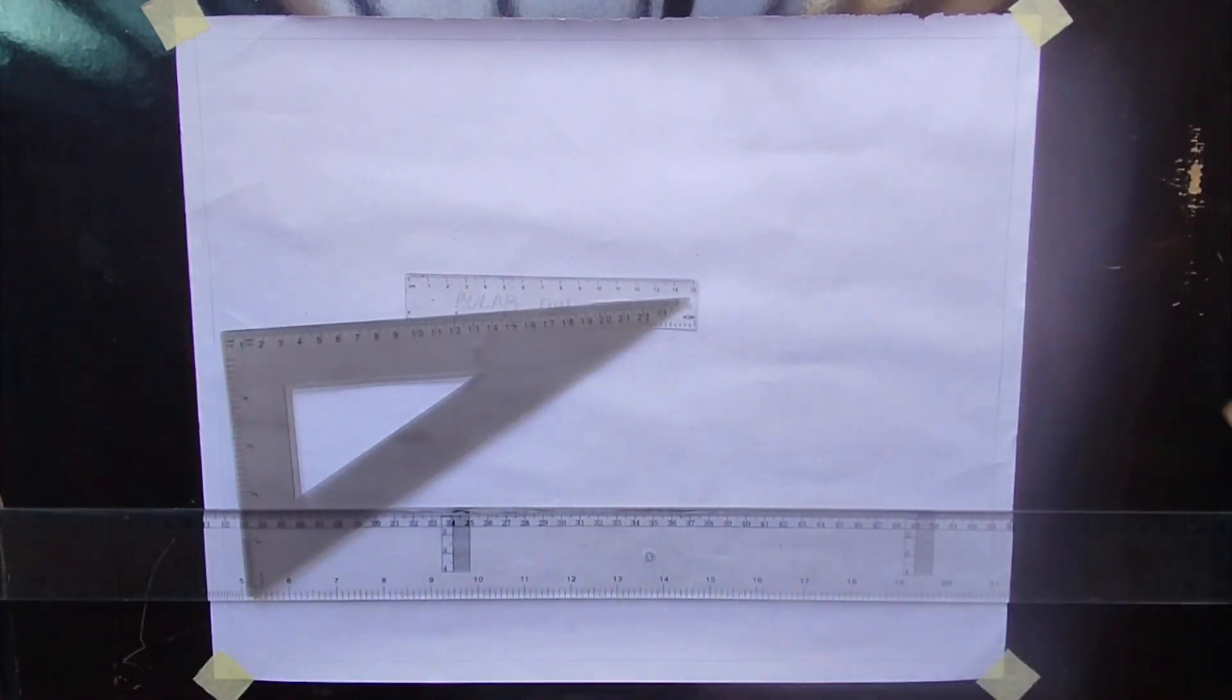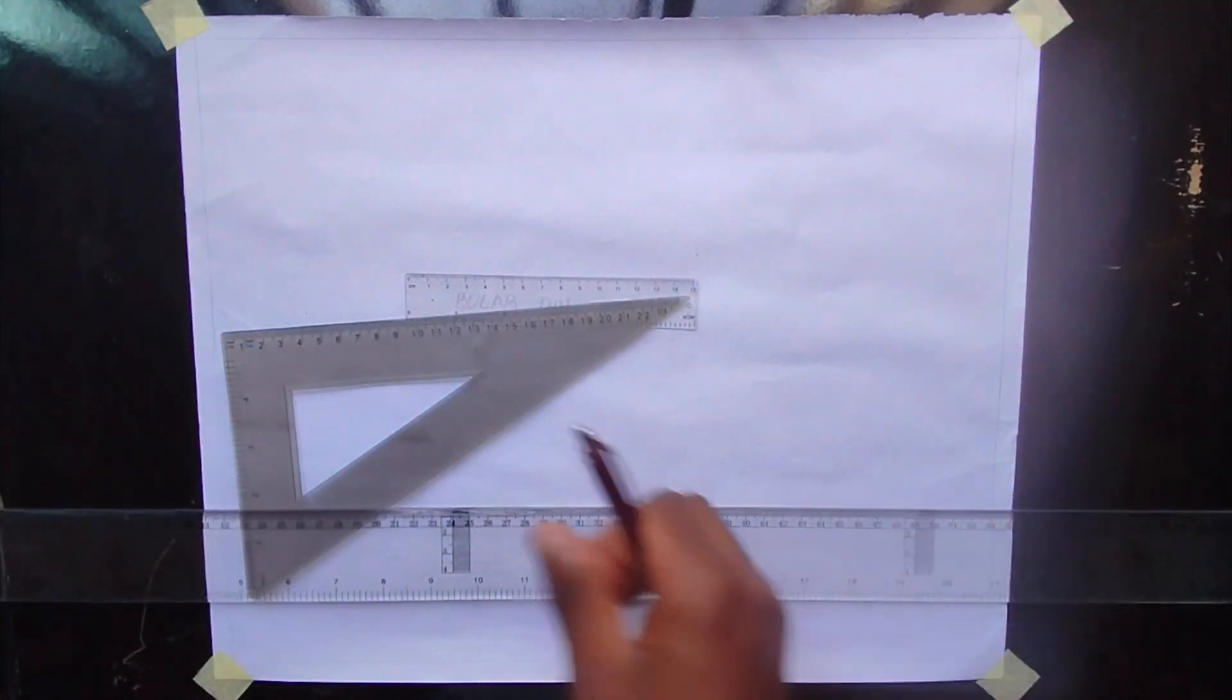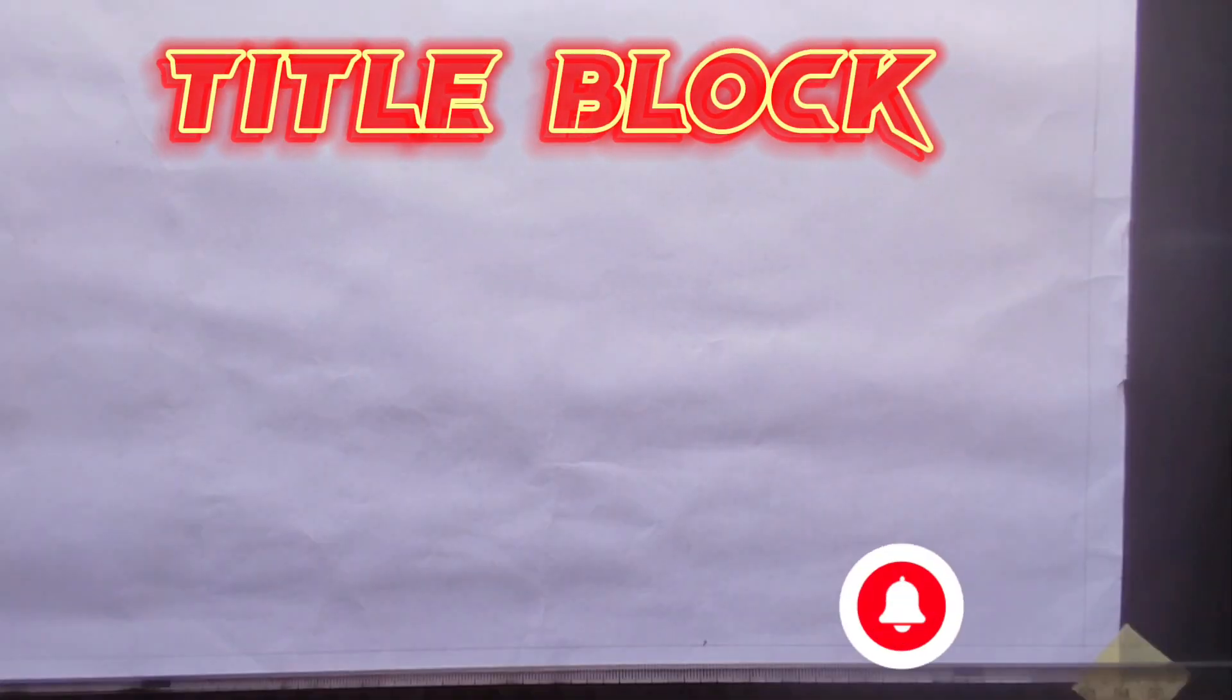So now we have drawn our borderline, we are now going to be drawing our title block. The title block is on the bottom right hand edge of our drawing paper. So now we'll be measuring 10cm,